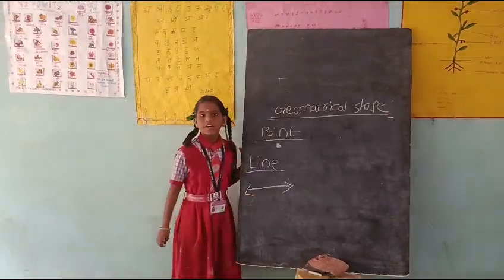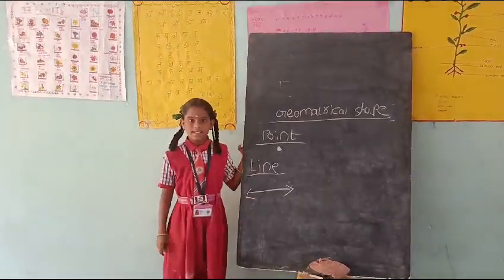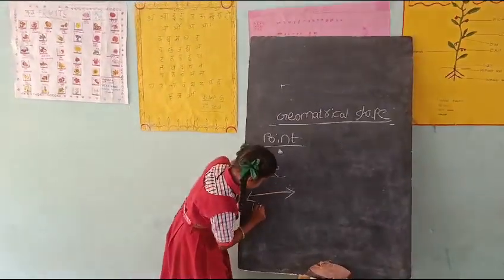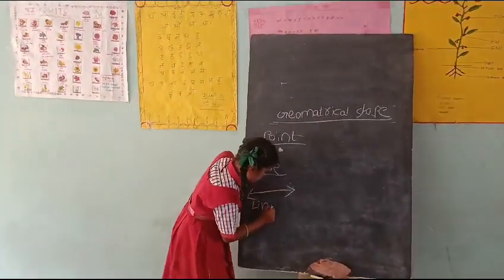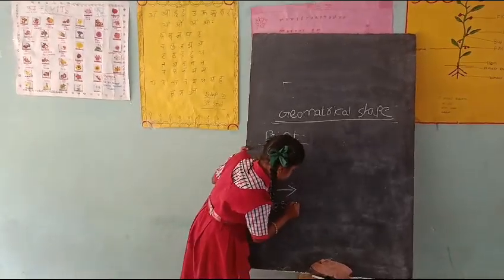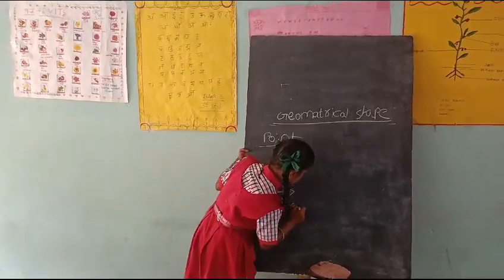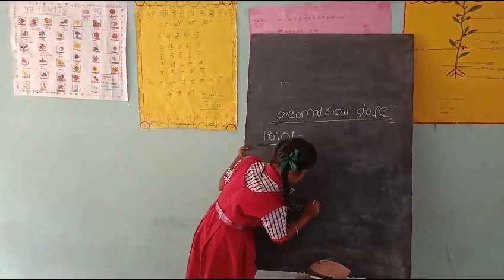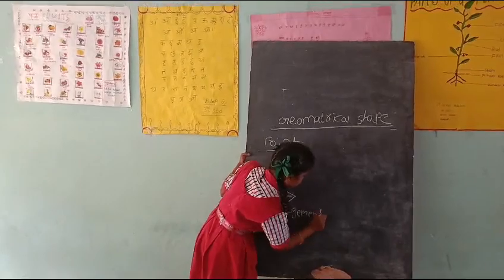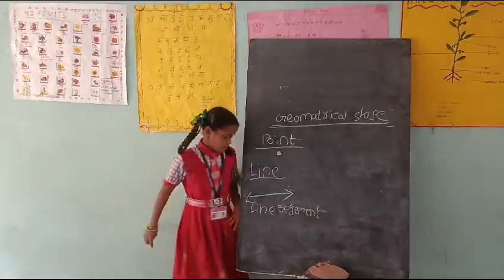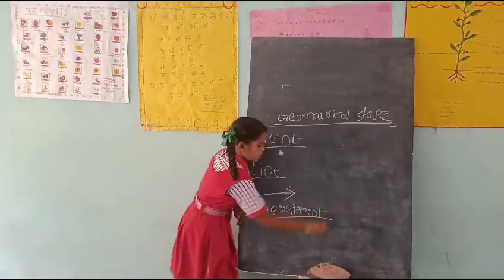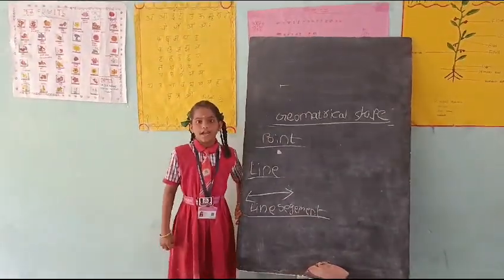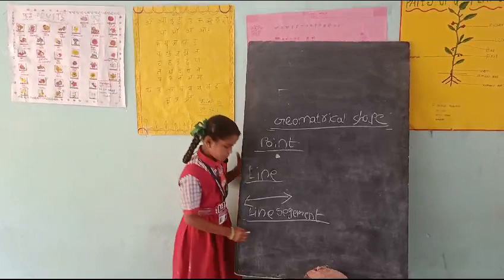Third one is Line Segment. A line segment has two endpoints.